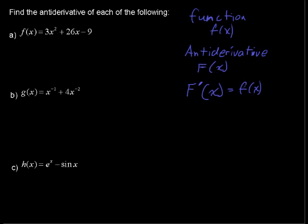So let's start that. Capital F of x, I'll write capital F of x, the antiderivative, equals, and you think about this as, what would you have to take the derivative of to get back to 3x squared?